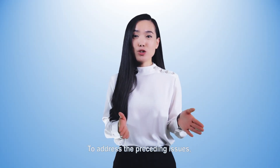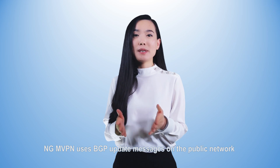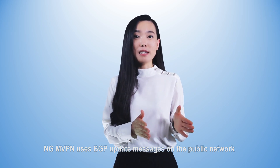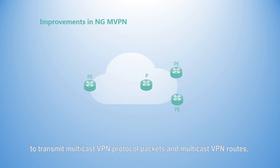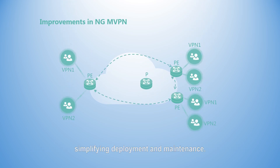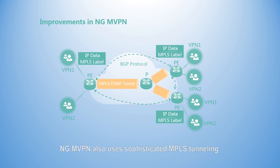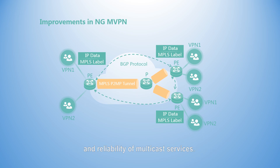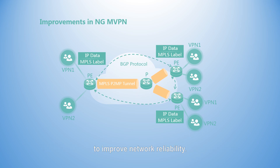To address the preceding issues, next generation MVPN, NGMVPN, was introduced. NGMVPN uses BGP update messages on the public network to transmit multicast VPN protocol packets and multicast VPN routes, simplifying deployment and maintenance. NGMVPN also uses sophisticated MPLS tunneling and protection techniques to improve the quality and reliability of multicast services. NGMVPN itself provides effective network protection solutions to improve network reliability.